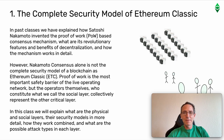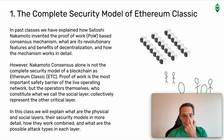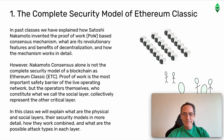The Complete Security Model of Ethereum Classic. In past classes, we have explained how Satoshi Nakamoto invented the proof-of-work (PoW) based consensus mechanism, its revolutionary features, benefits of decentralization, and how the mechanism works in detail. However, Nakamoto consensus alone is not the complete security model of a blockchain like Ethereum Classic (ETC). Proof-of-work is the most important safety barrier of the live operating network, but the operators themselves — who constitute the social layer — collectively represent the other critical layer. In this class, we will explain what the physical and social layers are, their security models, how they work combined, and what the possible attack types are in each layer.